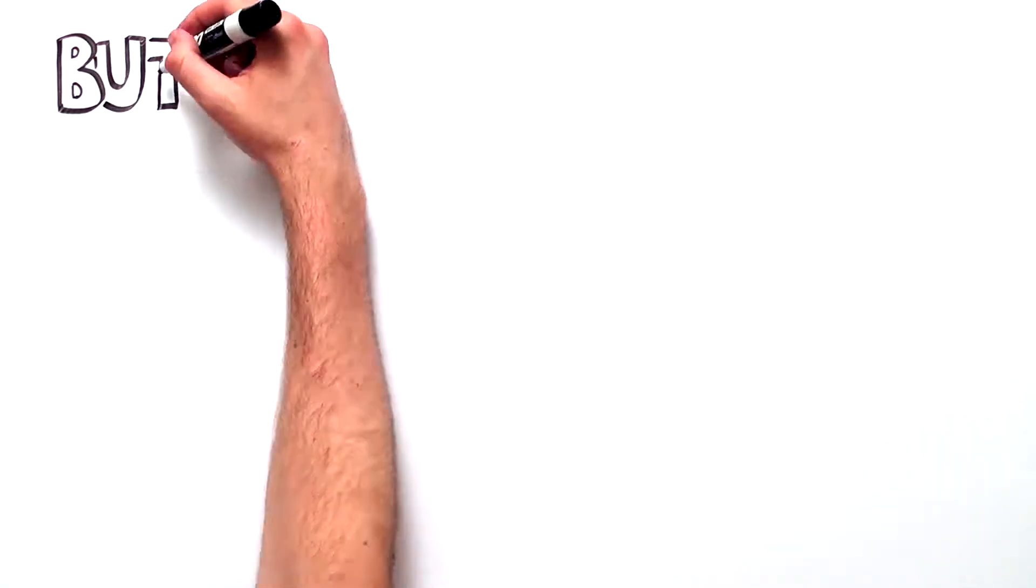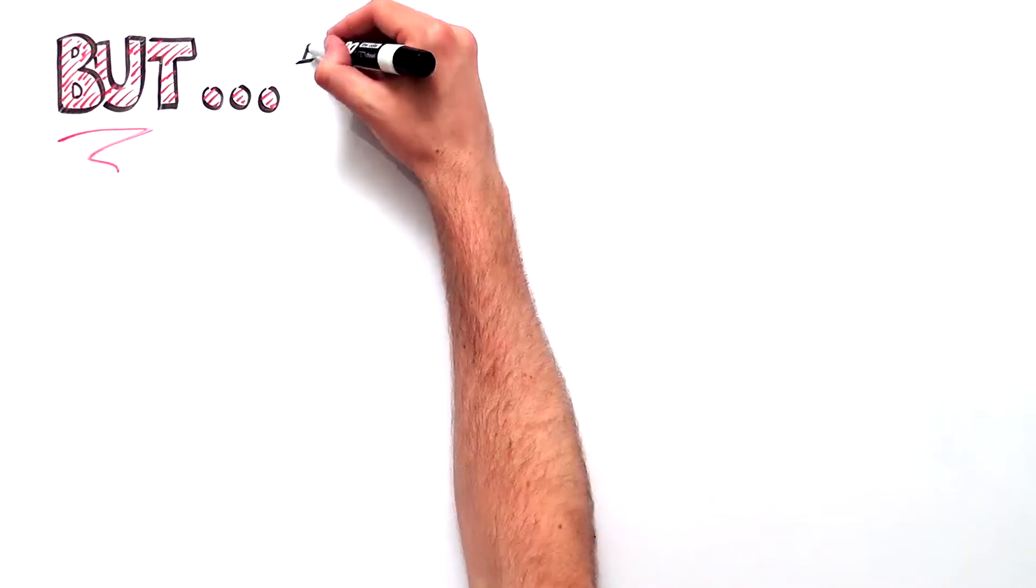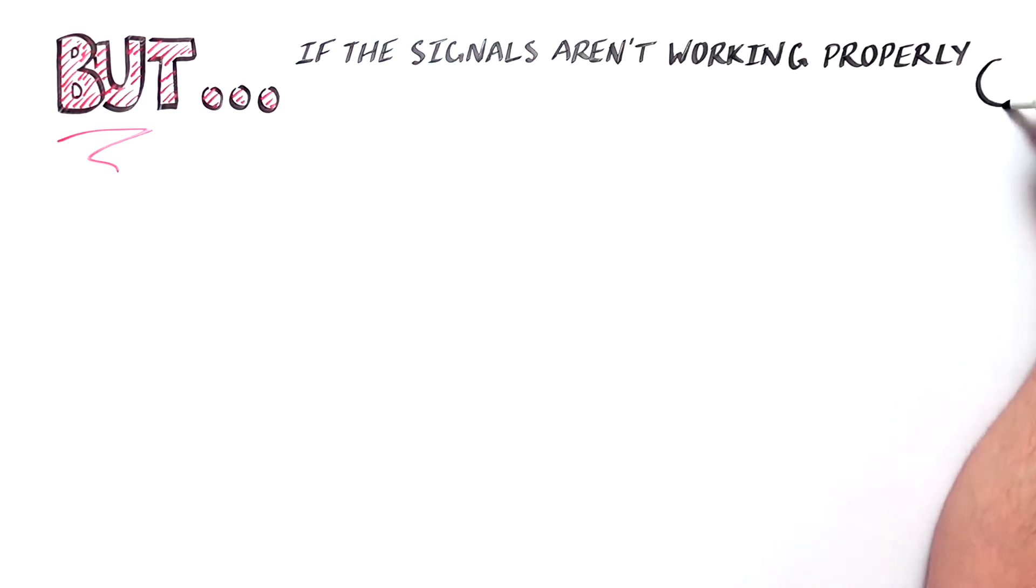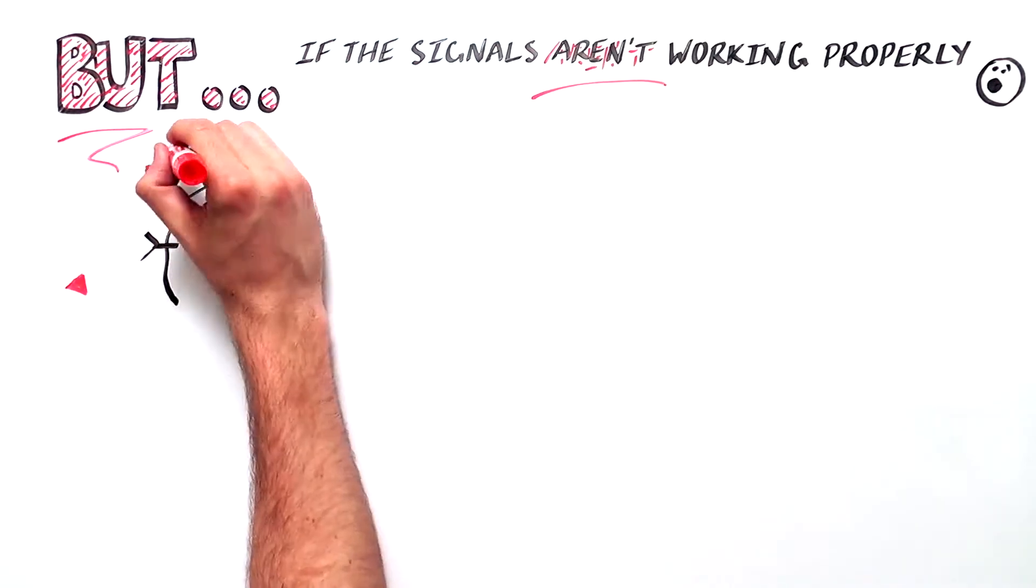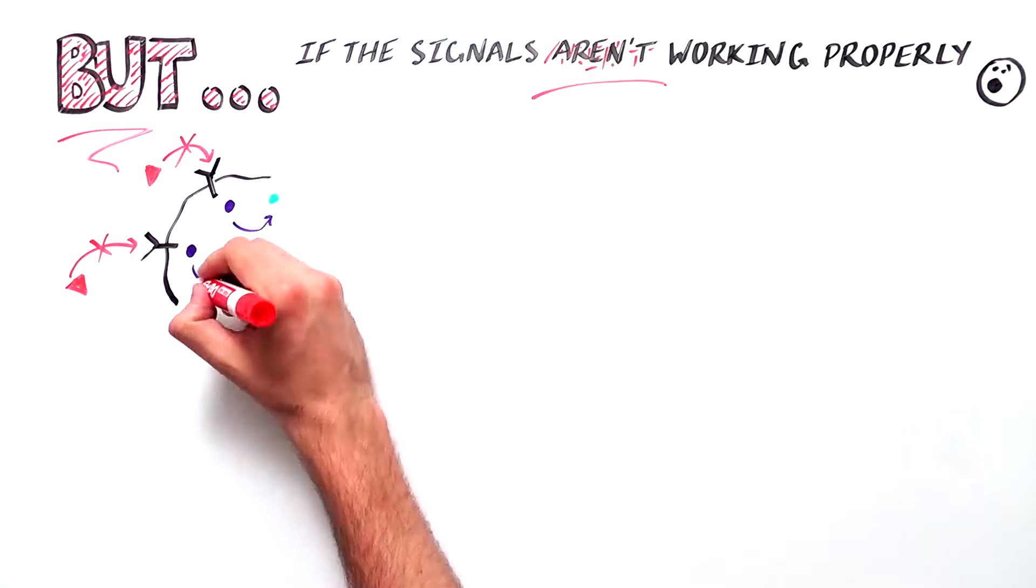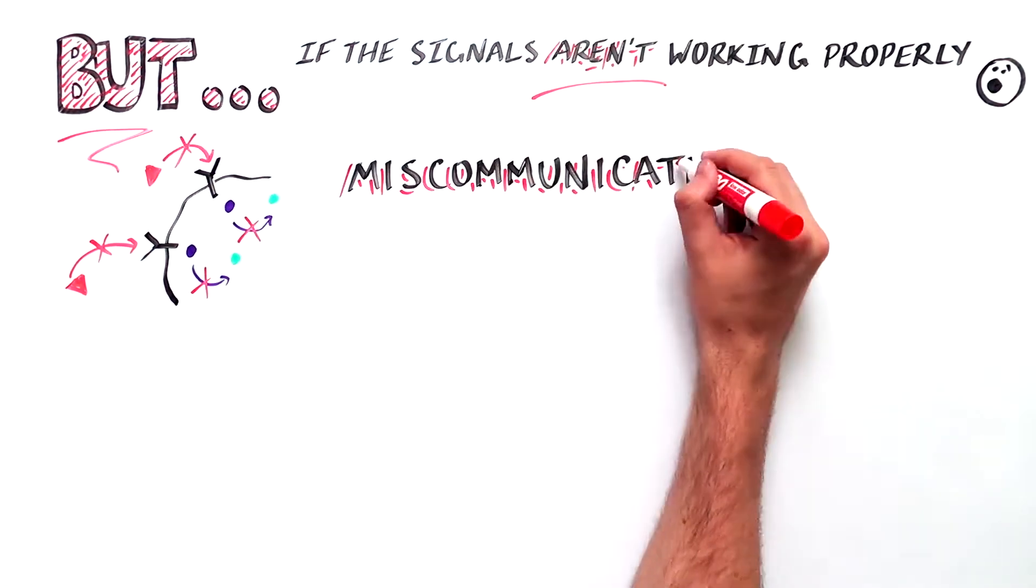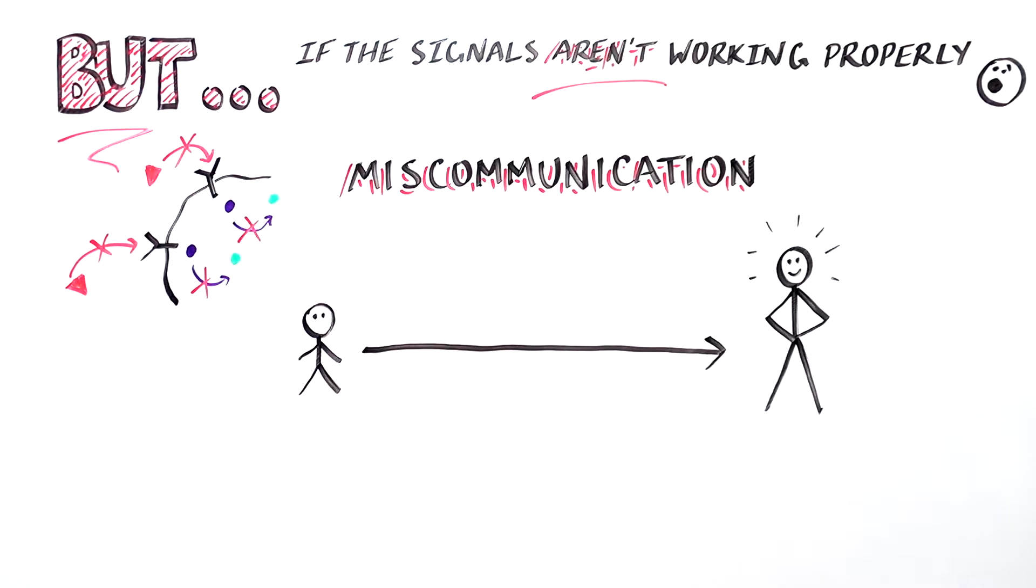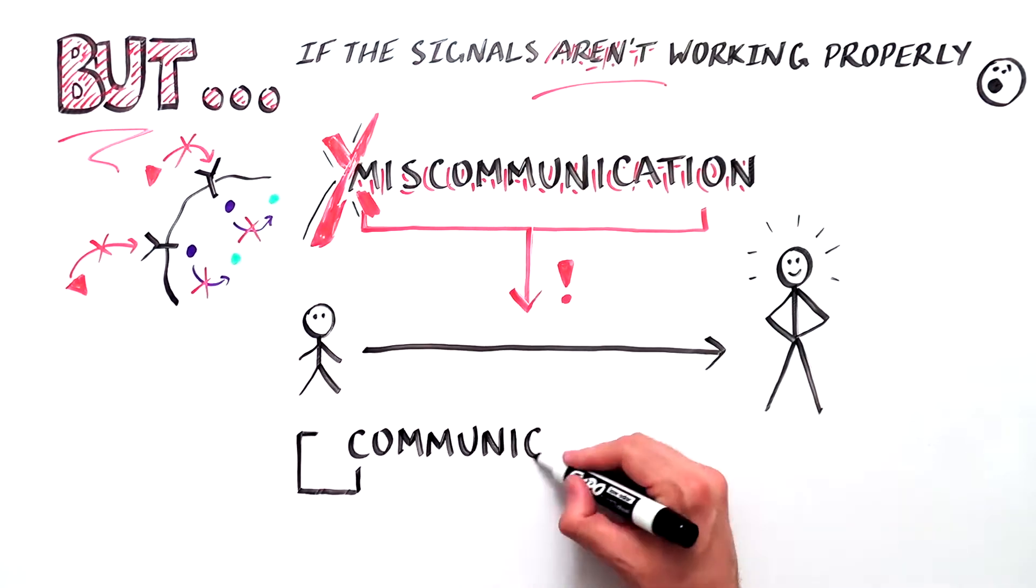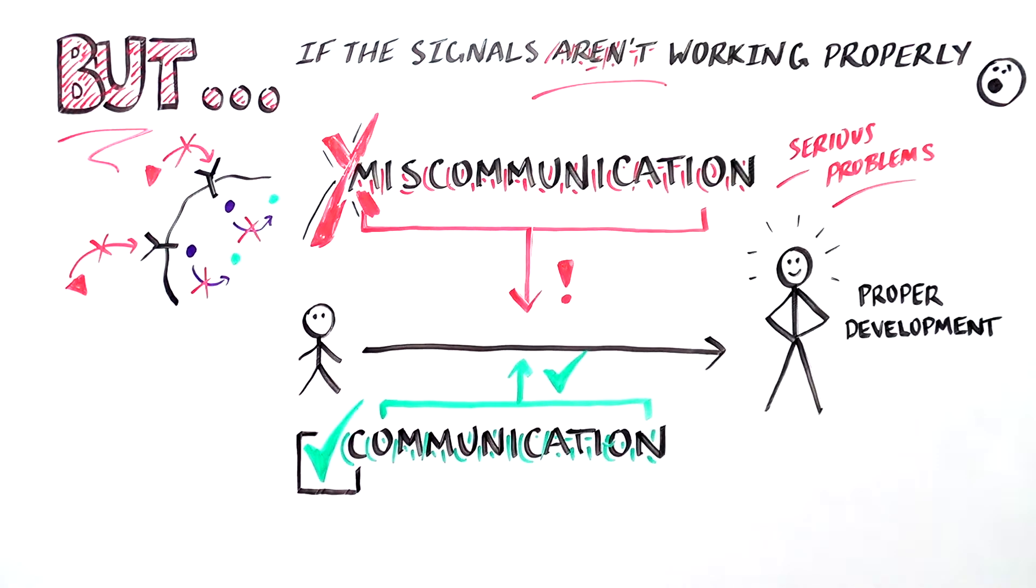But if any of the proteins that send or receive signals aren't working properly and are not communicating in the right way, the cell may not respond in the way that it should. This miscommunication can cause serious problems, especially because cell communication is so important for our body's normal development.